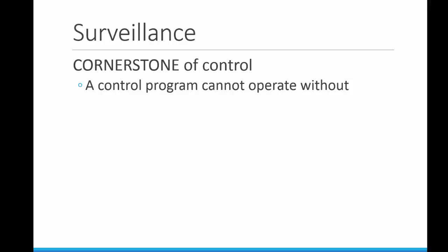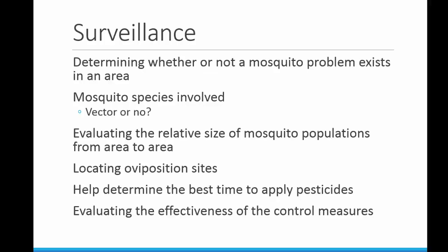Routine surveillance can keep control personnel informed about locations of major breeding areas, help to identify problem sites where control should be concentrated. Carefully interpreted survey data can also provide vital information. So, what kind of information can be gleaned from surveillance?